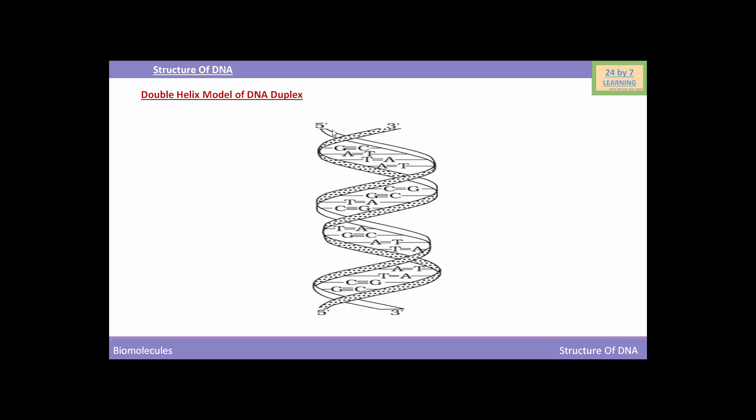These polynucleotide strands run anti-parallel to each other. That means one strand runs from 3 prime to 5 prime direction and other strand runs from 5 prime to 3 prime direction. So both the polynucleotide strands are anti-parallel to each other.